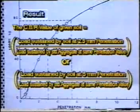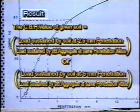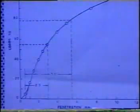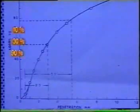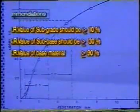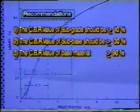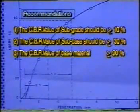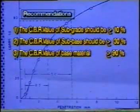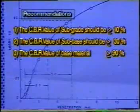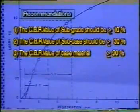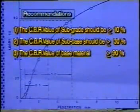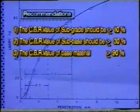An average of 3 tests is recommended for best results. Recommendations: CBR value for subgrade material should be greater than or equal to 10%. CBR value for sub-base material should be greater than or equal to 30%. CBR value for base material should be greater than or equal to 90%.